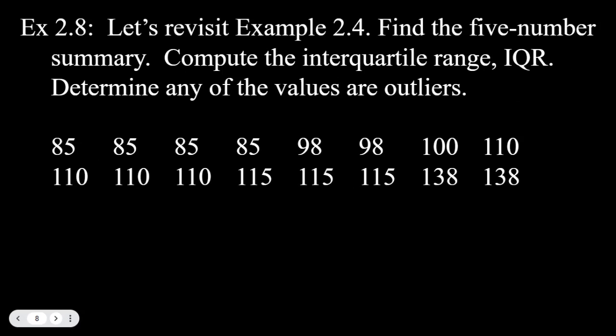Example 2.8 revisits Example 2.4 data: find the five-number summary, compute the IQR, and determine if any values are outliers. The data has 16 total values already ordered. Splitting them in half, the halfway point is between the two 110s, so the median is 110, also called quartile 2. The minimum is 85 and the maximum is 138.